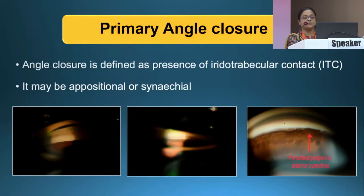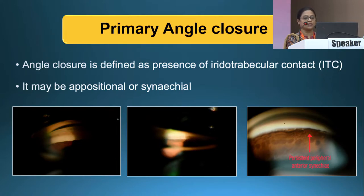Coming to what is primary angle closure, or what we call primary angle closure disease — it is the presence of iridotrabecular contact. This contact may be either oppositional or synechial, which can be differentiated by indentation gonioscopy or by manipulation of the angle.